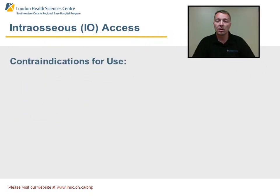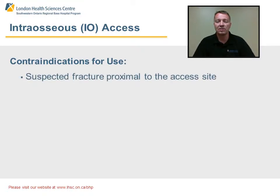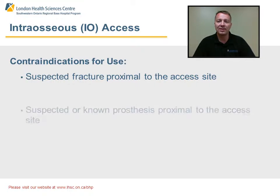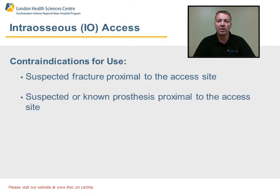So what are our contraindications for use? Interosseous access is contraindicated when there is a fracture proximal to the access site, as well as a suspected or known prosthetic knee or limb proximal to the access site.